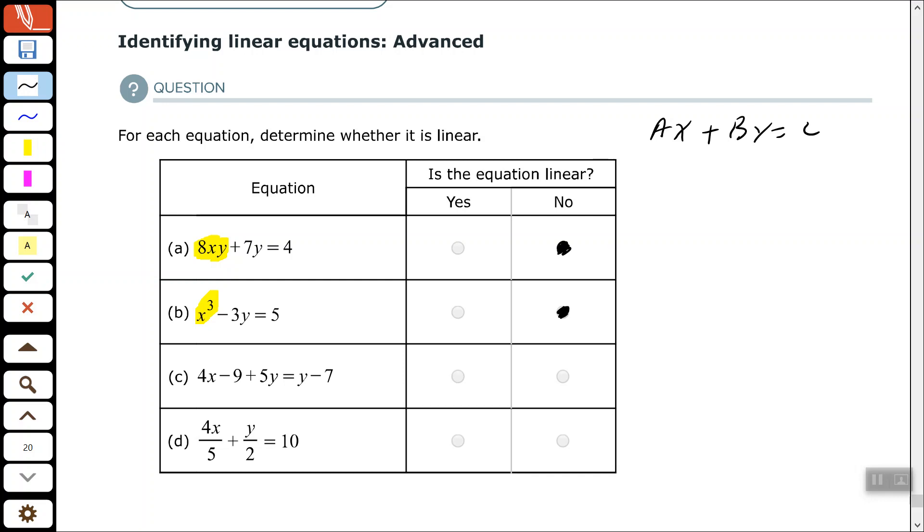Part C, we have 4x minus 9y plus 5y equals y minus 7. So, 4x. Let's see if we can get x and y on the same side in the number without the variables on the opposite side and see if it ends up in that form. All right. So, let's add 9 to both sides and let's subtract 1y from each side to get x and y on the same side.